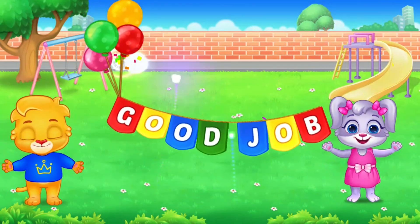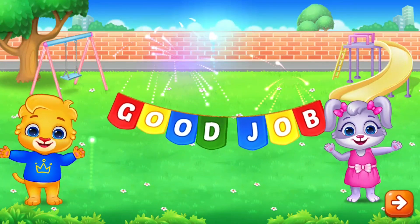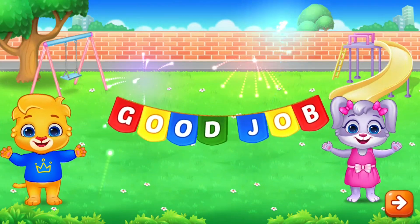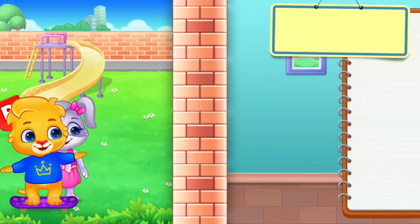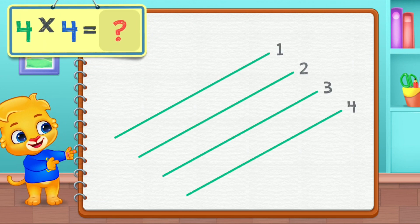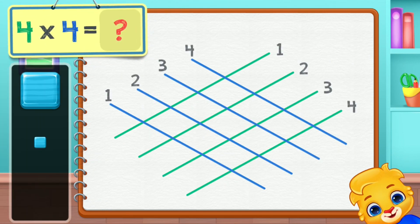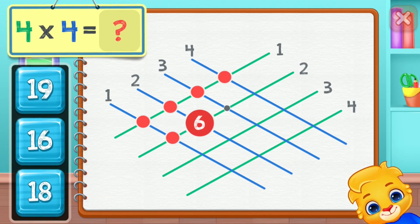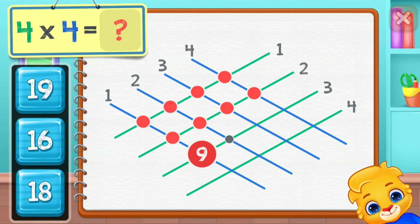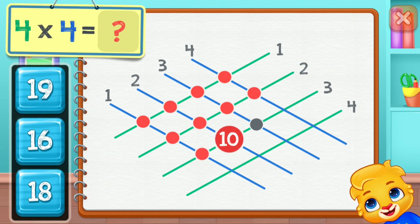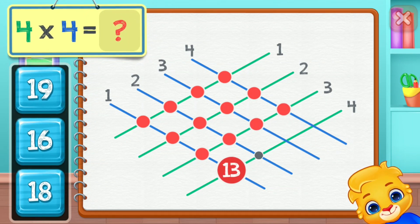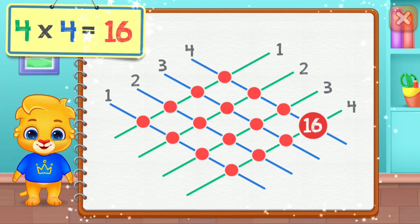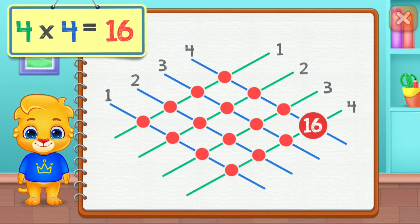Good job! Four times four equals... One, two, three, four, five, six, seven, eight, nine, ten, eleven, twelve, thirteen, fourteen, fifteen, sixteen. Four times four equals sixteen.